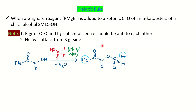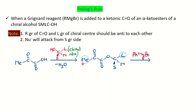Now you have the Grignard reagent, which will attack on the more electrophilic carbon. Ph⁻ will act as the nucleophile. We have two carbonyls — one is the ketonic carbonyl and the other is the ester carbonyl. For the ketonic carbonyl, the double bond donates electrons to oxygen, giving oxygen a negative charge and the carbon a positive charge, which is partially satisfied by the +I (inductive) effect of Me. For the ester carbonyl, the positive charge on carbon is stabilized by the lone pair of oxygen through the +M (mesomeric) effect.